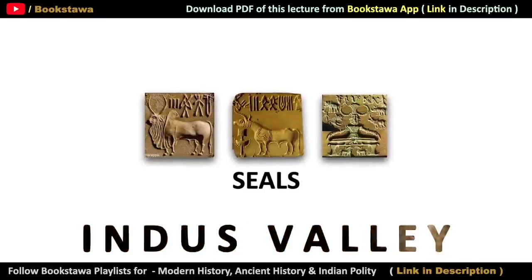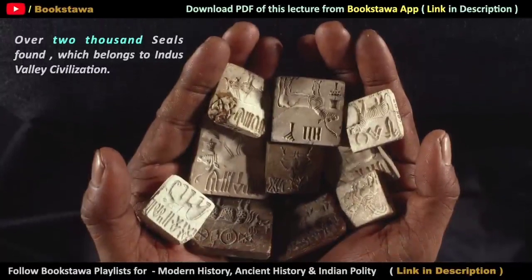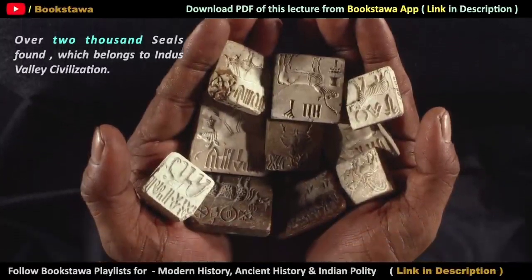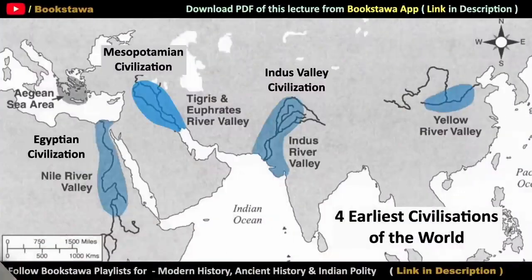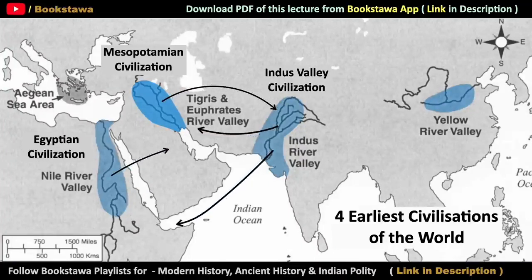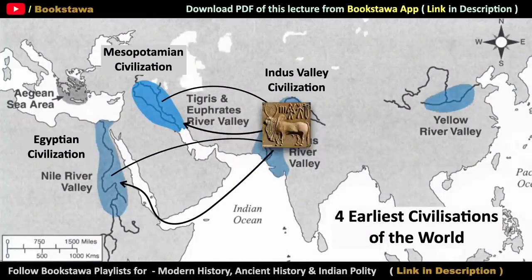In today's video we will see where and which seals have been found in the Indus Valley Civilization and what was the use of these seals. There is strong evidence that there used to be trade between the Indus Valley Civilization, Mesopotamian Civilization and the Egyptian Civilization, and its biggest evidence is the seals.